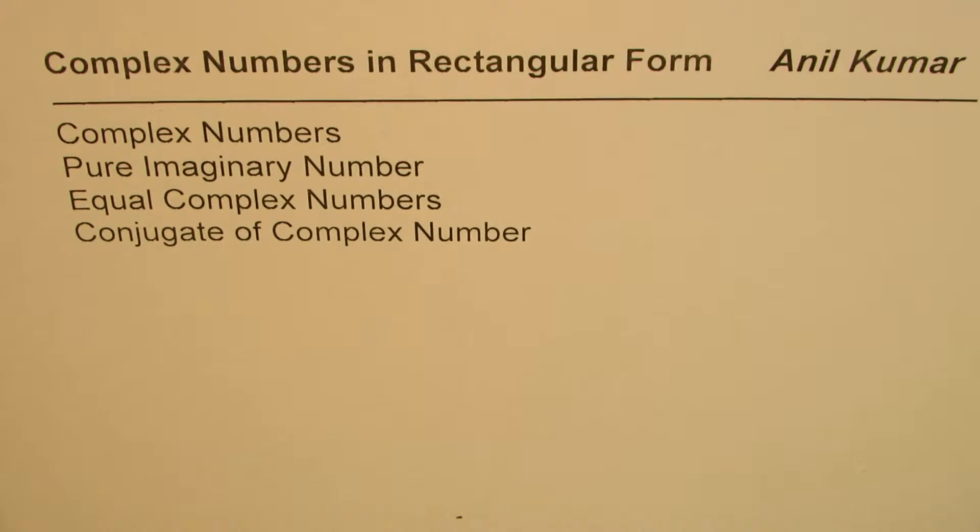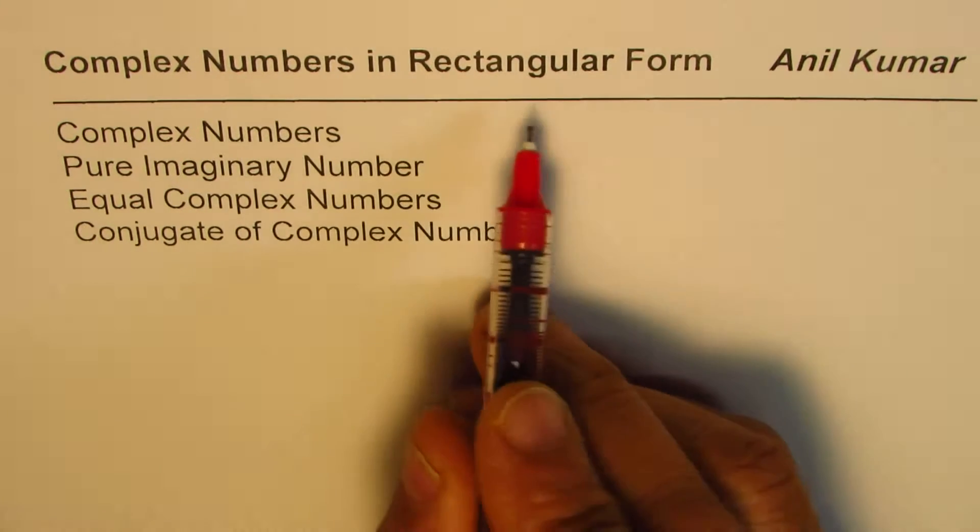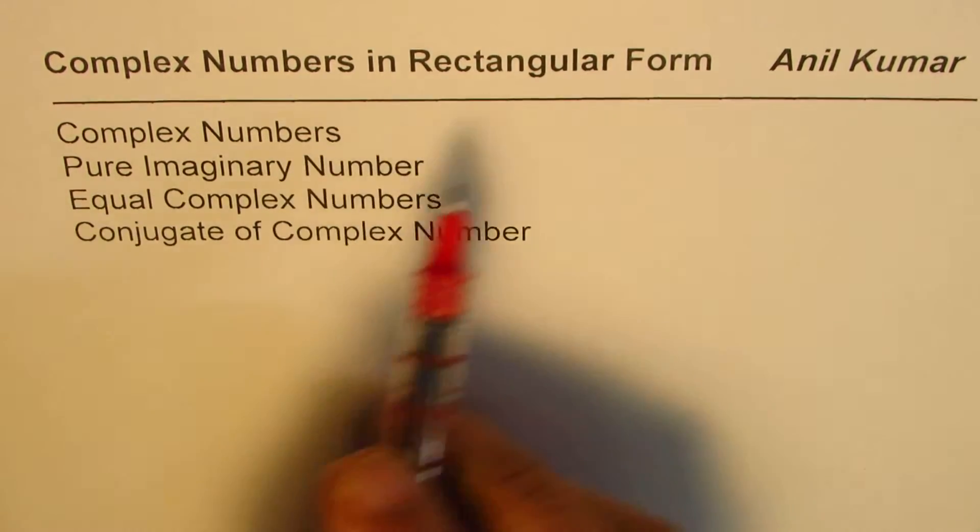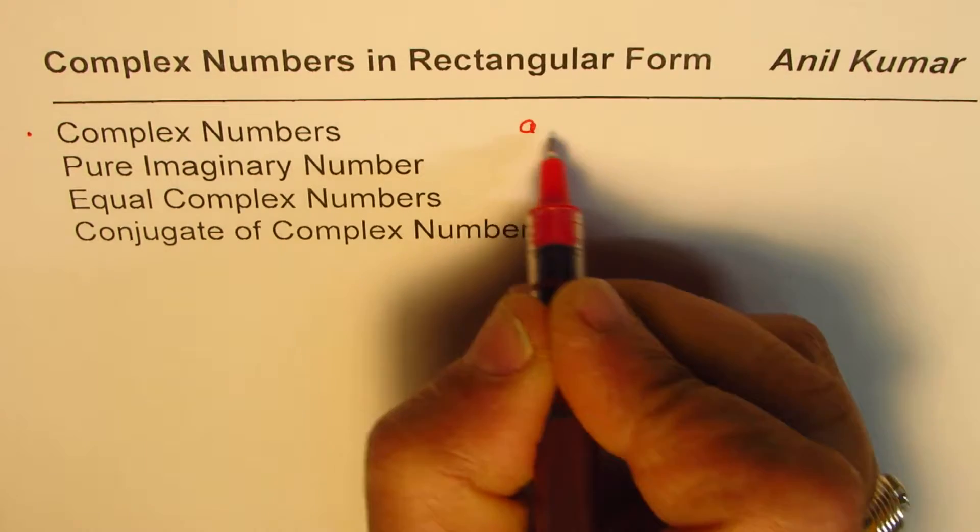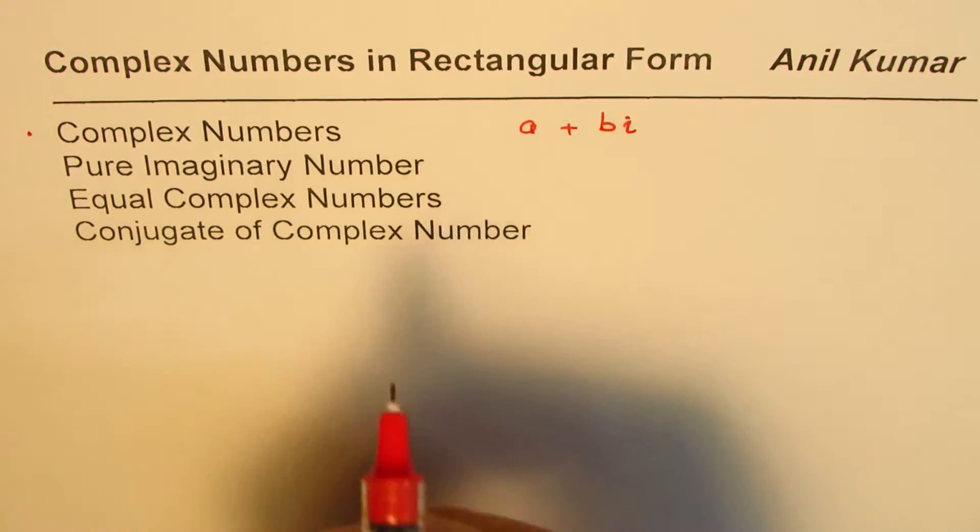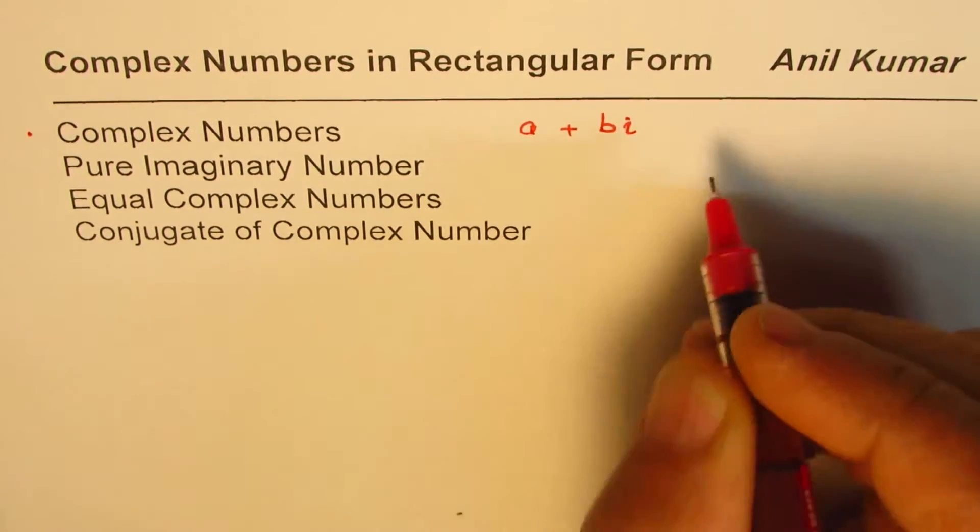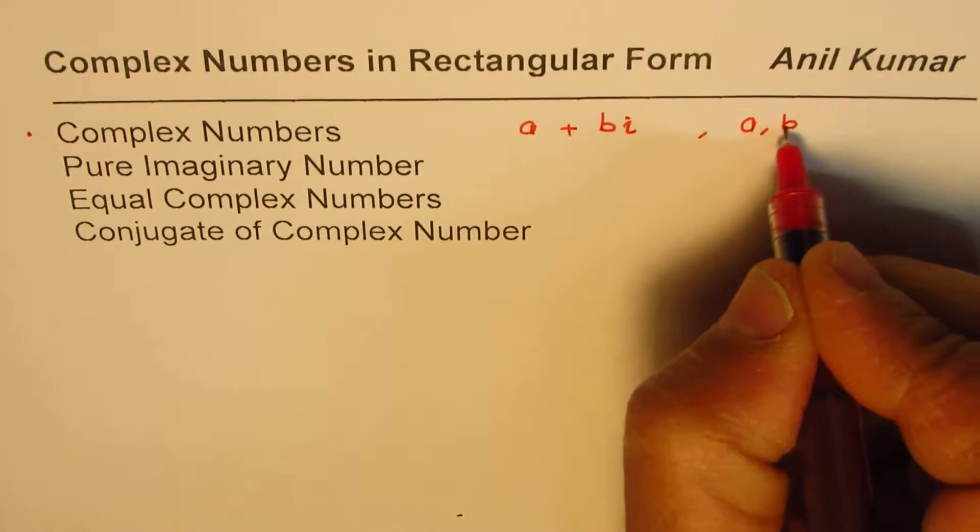I'm Anil Kumar. We are exploring complex numbers in rectangular form. We understand that a complex number could be written in the form of a plus bi, where a and b are real numbers.